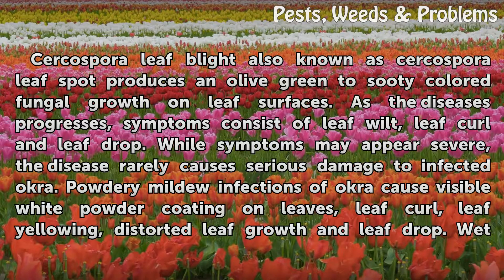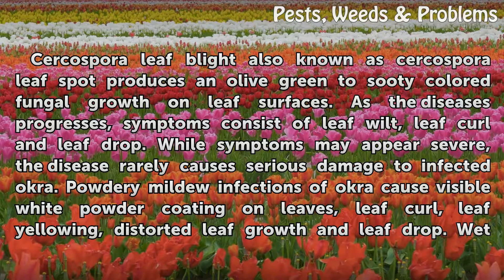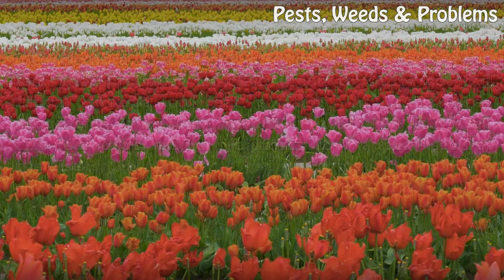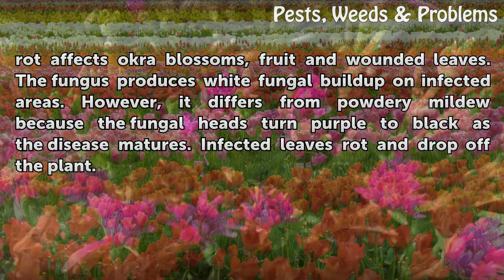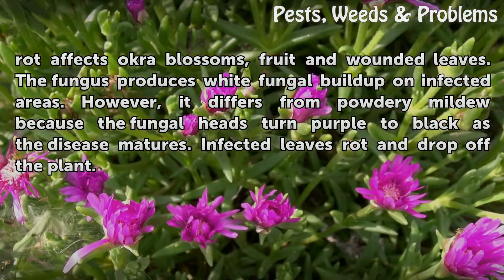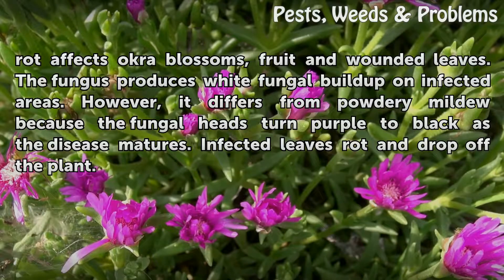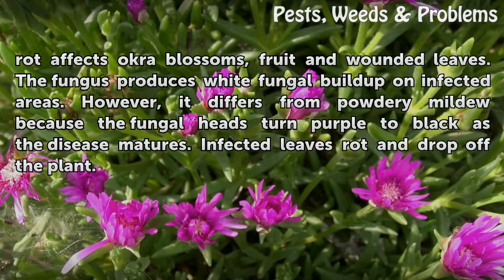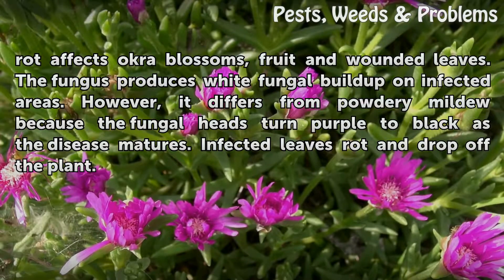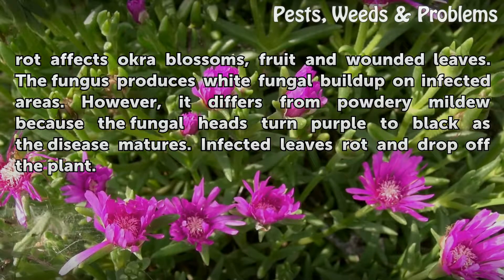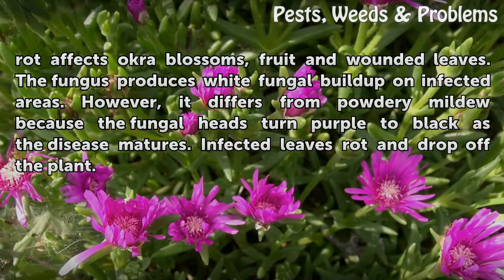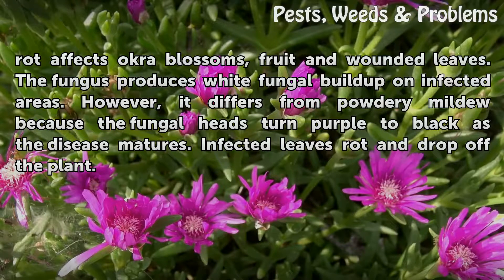Powdery mildew infections of okra cause visible white powder coating on leaves, leaf curl, leaf yellowing, distorted leaf growth, and leaf drop. Wet rot affects okra blossoms, fruit, and wounded leaves. The fungus produces white fungal build-up on infected areas. However, it differs from powdery mildew because the fungal heads turn purple to black as the disease matures. Infected leaves rot and drop off the plant.